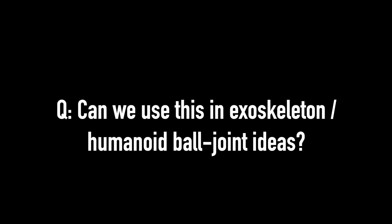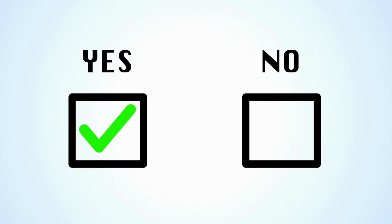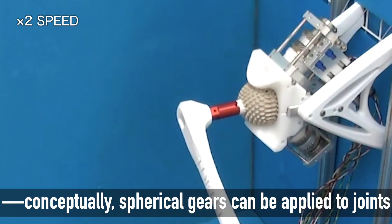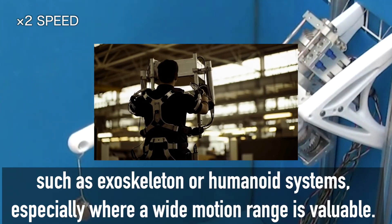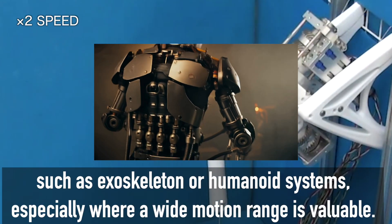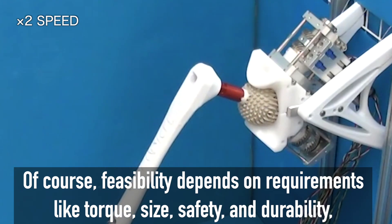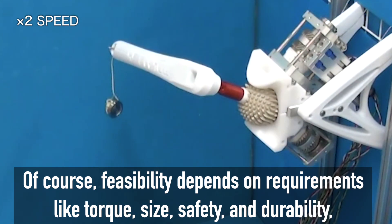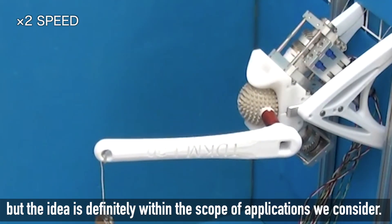Can we use this in exoskeleton humanoid ball joint ideas? Yes, conceptually, spherical gears can be applied to joints such as exoskeleton or humanoid systems, especially where a wide motion range is valuable. Of course, feasibility depends on requirements like torque, size, safety, and durability. But the idea is definitely within the scope of applications we consider.